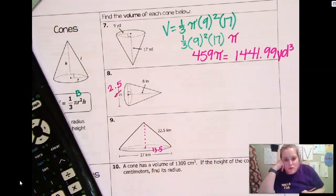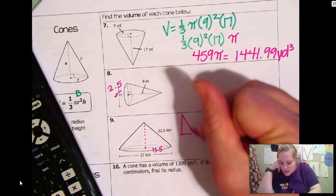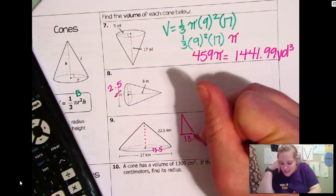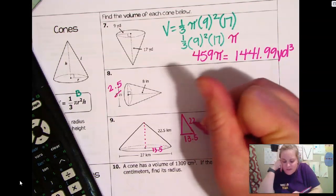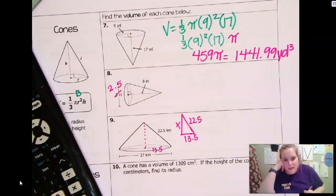To find your height of this one, you are going to use the Pythagorean theorem. 13.5 is a leg. 22.5 is your hypotenuse. So you would be solving for a leg. I'm not going to do that one. I'll show you the key so that you can look at that one. All right.